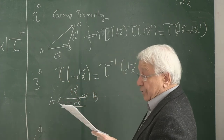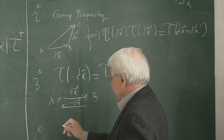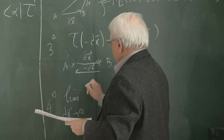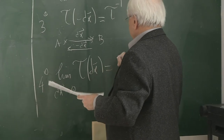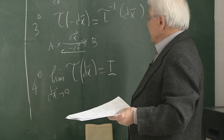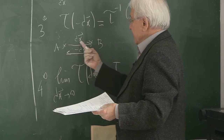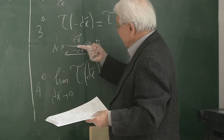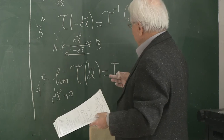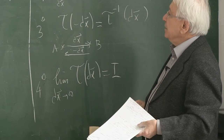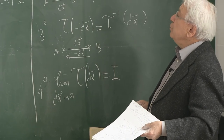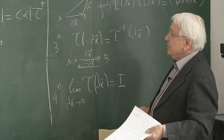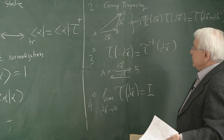The fourth property is: in the limit as dx → 0, T(dx) → identity. This is self-explanatory: if there is no dx, if delta-x is shrunk to zero, then b is shrunk back to a, there is no translation, and the operator must be the identity. Next we will combine these four properties to construct the infinitesimal translation operator explicitly.